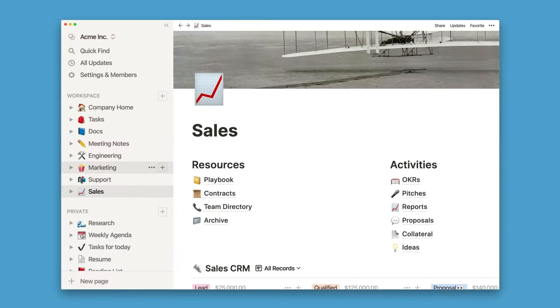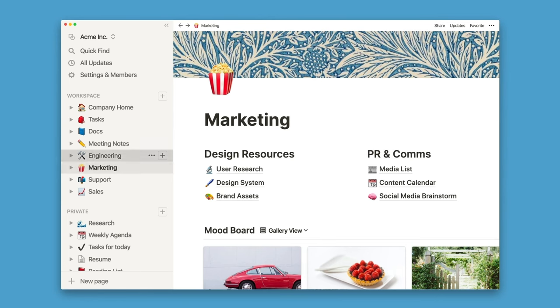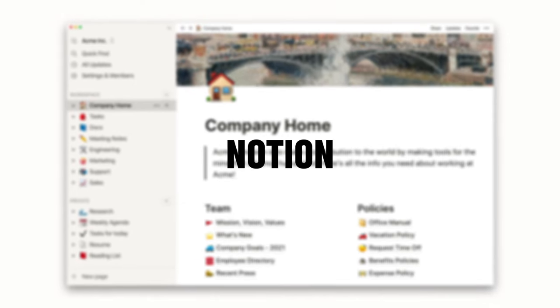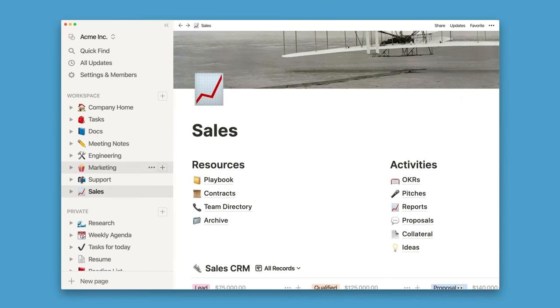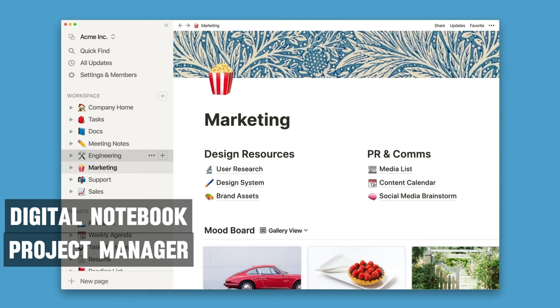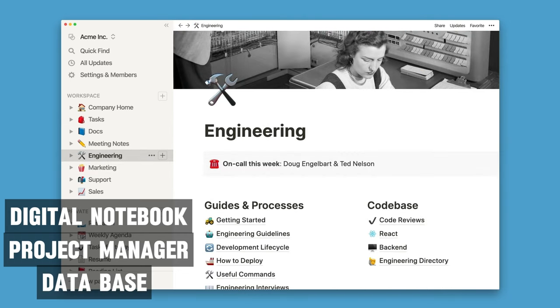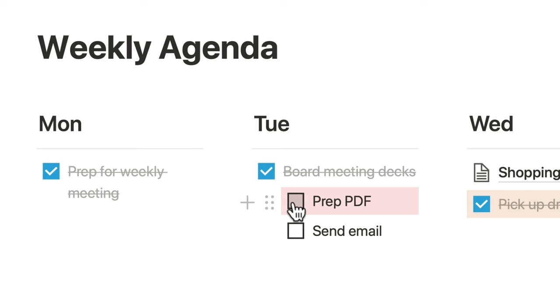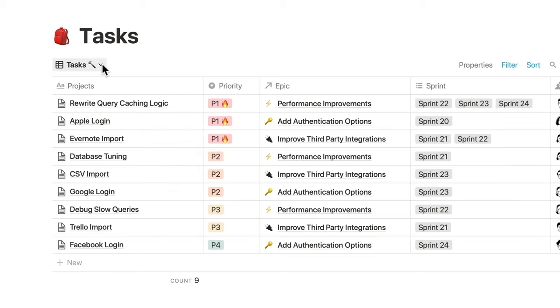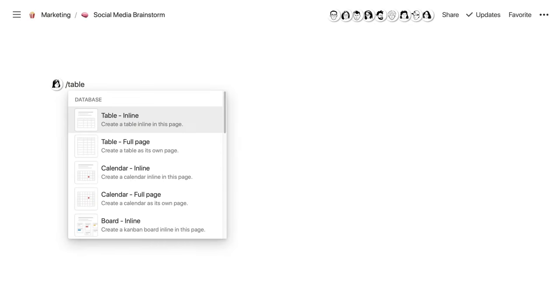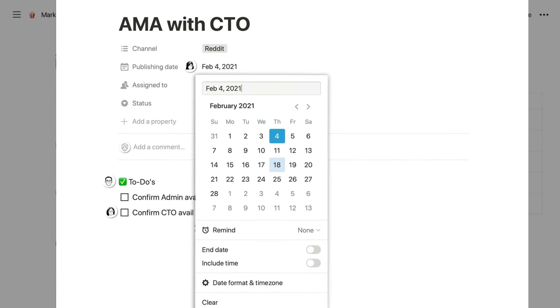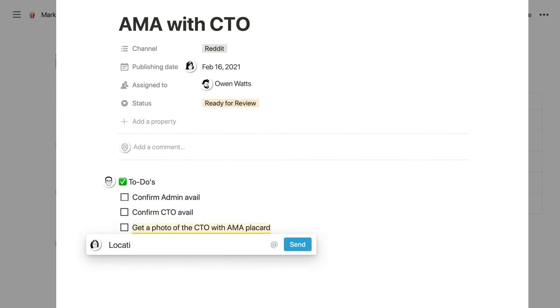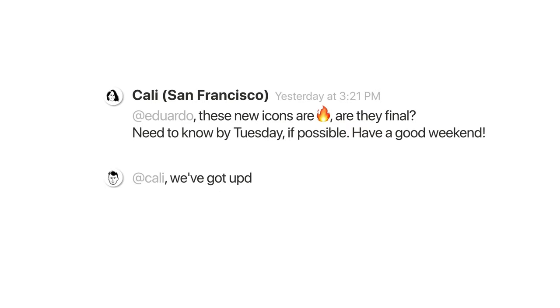That's where Notion comes in, a versatile workspace that I personally use to organize my thoughts, research, and insights on topics as complex and intriguing as the black hole information paradox. Imagine having a digital cosmos at your fingertips, where you can map out theories, compile data, and connect the dots between quantum mechanics and relativity, all in one beautifully organized space.